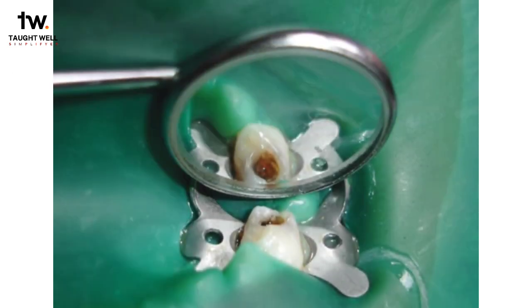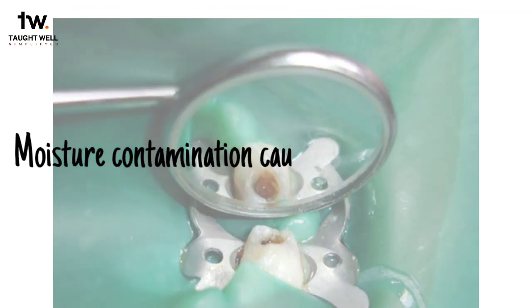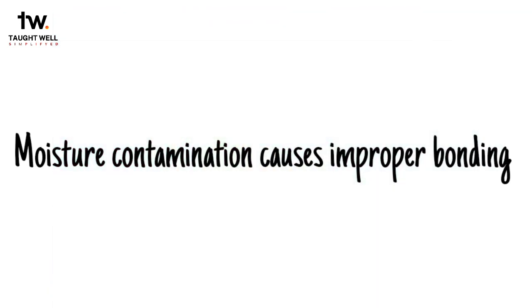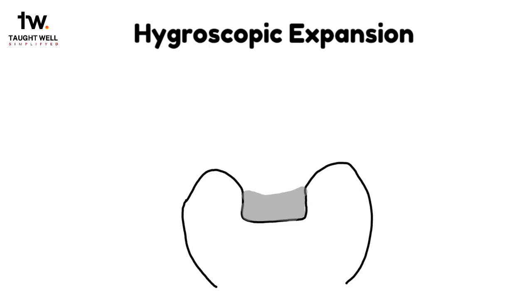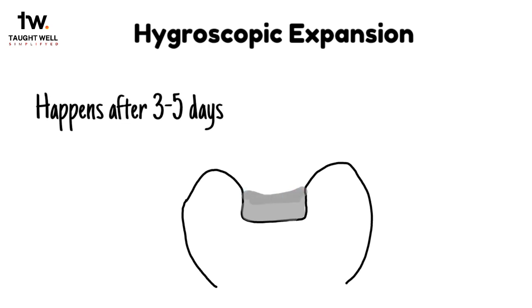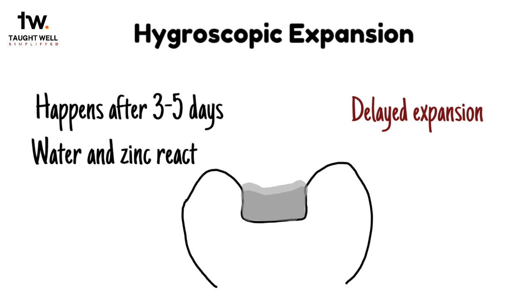Proper isolation is a must for using restorative materials like composites because moisture contamination can cause improper bonding. For amalgam, isolation plays an important role in the success of the restoration because if the amalgam alloy is contaminated with moisture during trituration or condensation, then a large expansion of the restoration may happen after 3 to 5 days. This is called the delayed expansion of amalgam, and it happens because hydrogen is produced by a reaction between zinc and water, causing a rise in the internal pressure of the restoration, thus causing an increase in size over time. It is also called hygroscopic expansion.